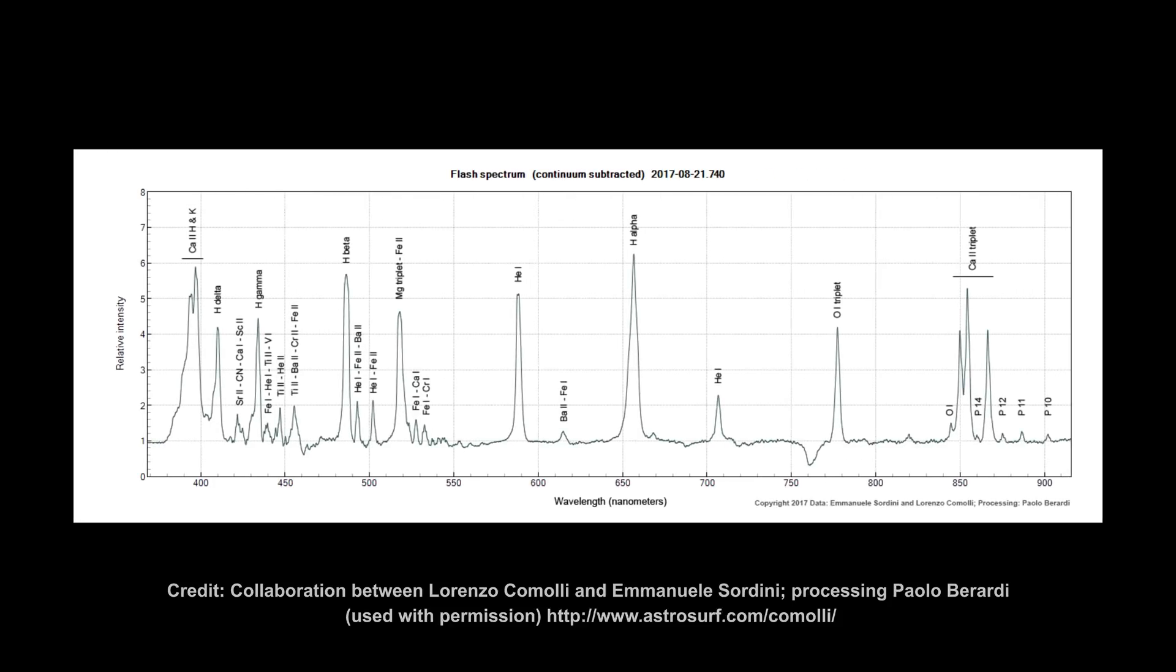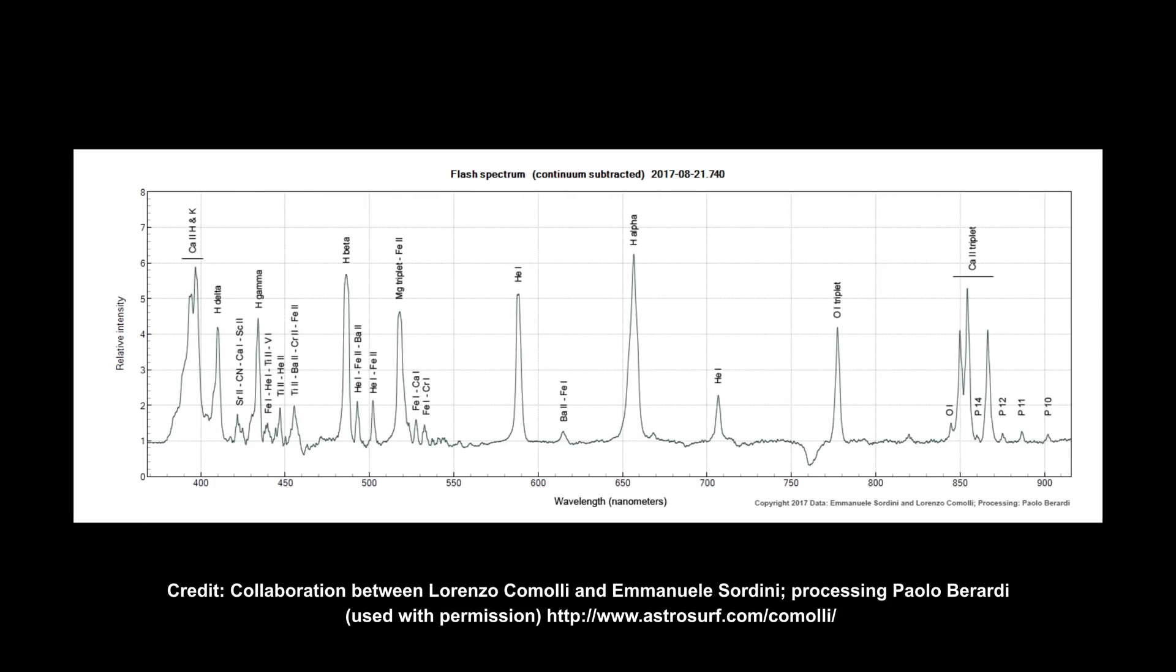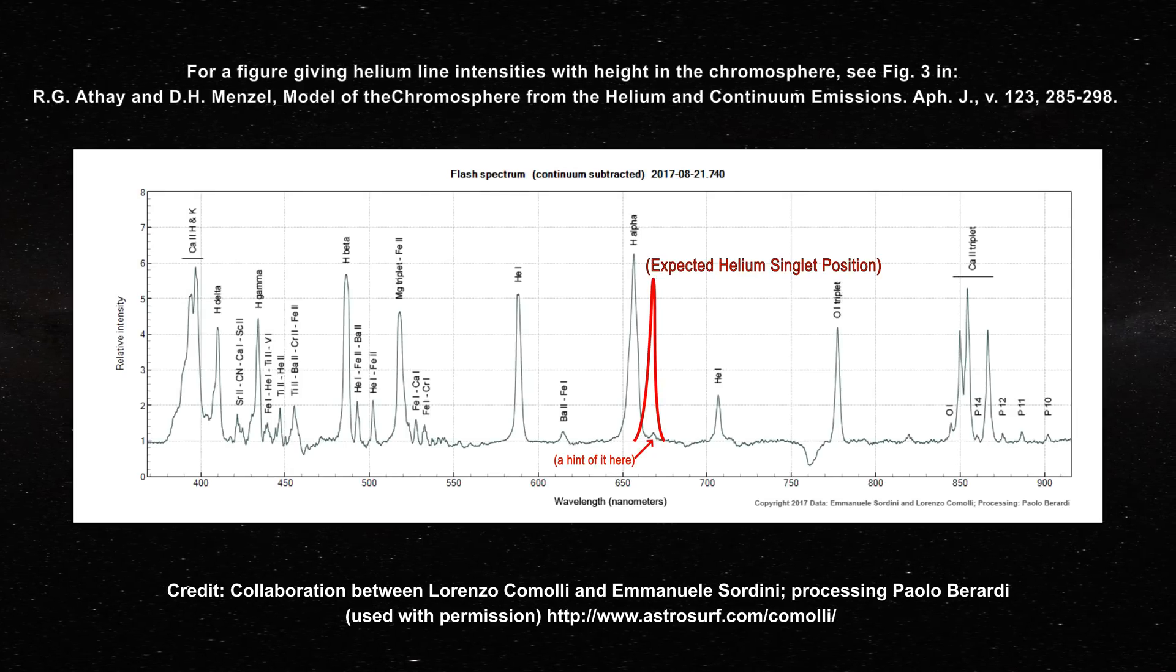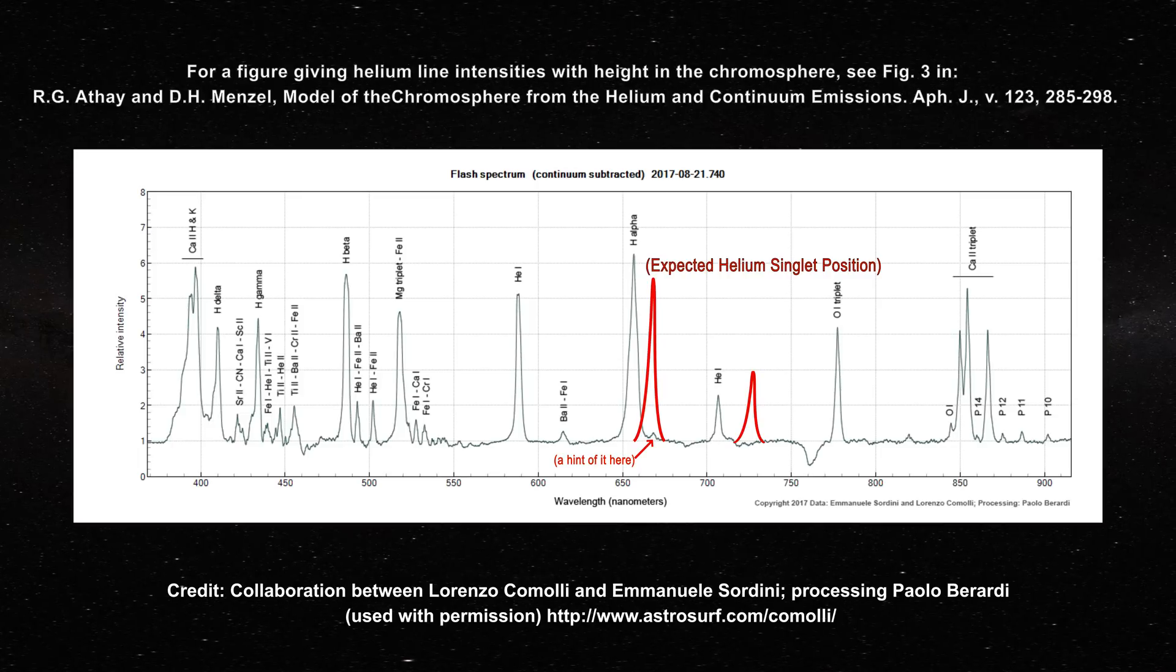Next, look at the chromospheric spectrum in this region once again. Note that the singlet 668 nanometer line is missing even though it should have been nearly iso-intense to the 587 nanometer line. The singlet line at 728 nanometers is also absent.